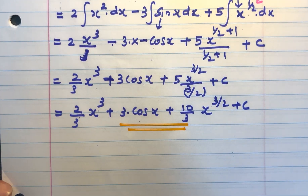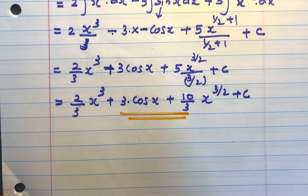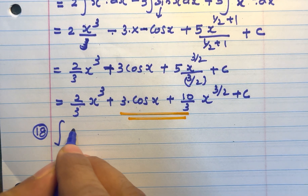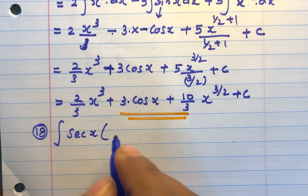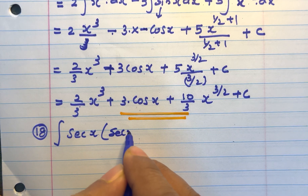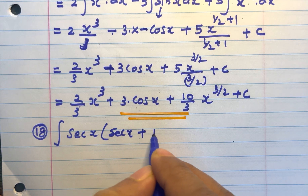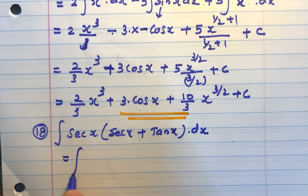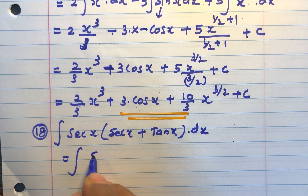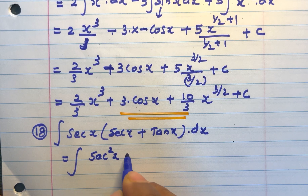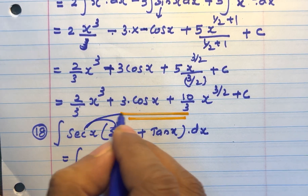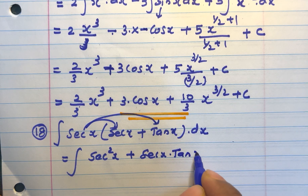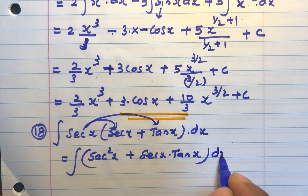Question number 18. Integral of secx into (secx plus tanx) into dx. Please open the bracket. secx into secx is sec squared x, plus secx into tanx is secx tanx, into dx.